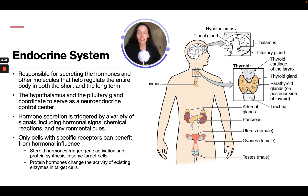Only cells with specific receptors can benefit from hormonal influence. Steroid hormones trigger gene activation and protein synthesis in some target cells, and protein hormones change the activity of existing enzymes in target cells.